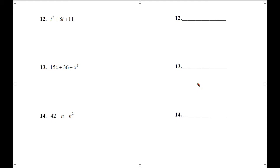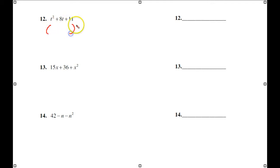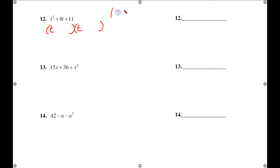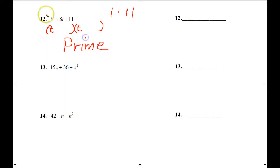For example 12, is it in standard form? Yes. T and T in the first positions. We need factors of 11 that add up to 8. Since 11 is prime, there's only one set of factors — 1 and 11 — and there's no way to get 8 from that. So example 12, after examination, is prime. This is not factorable.